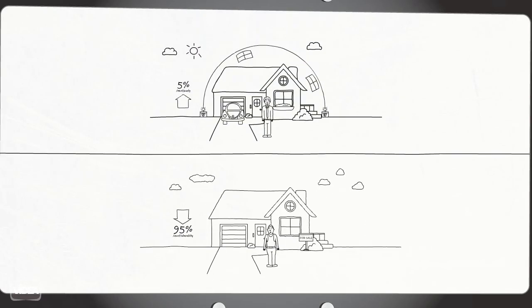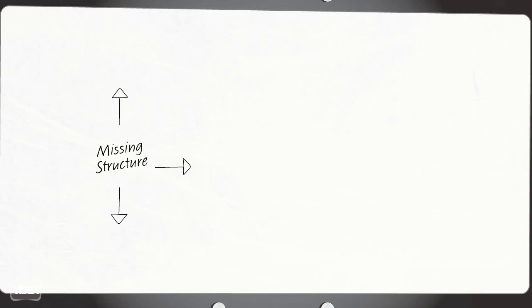So how do you go from vulnerability to security? What is the missing structure in this diagram?